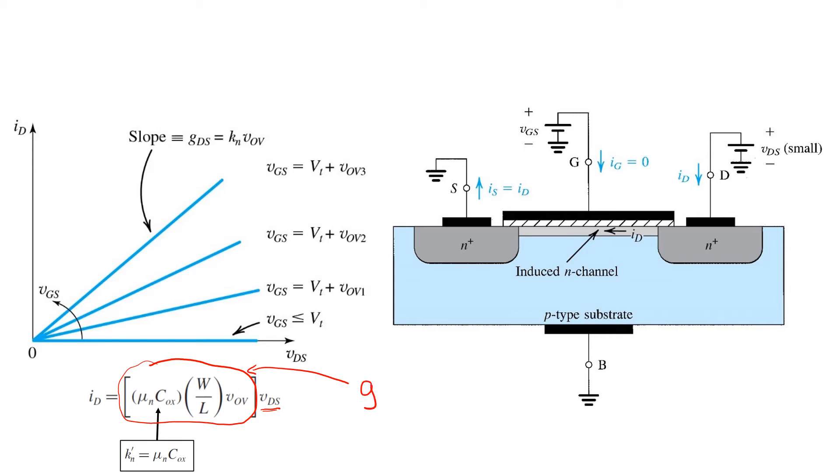GDS, which is one over the channel resistance RDS. The expression is mu n C-ox W over L and VOV.